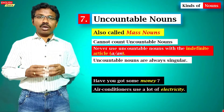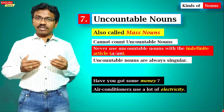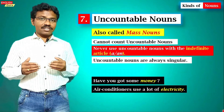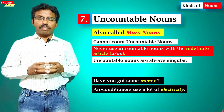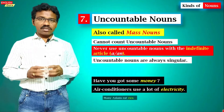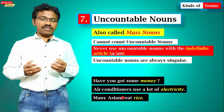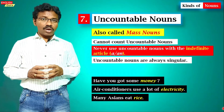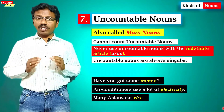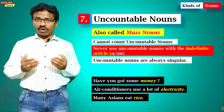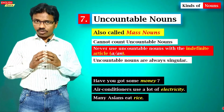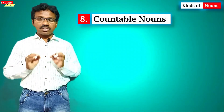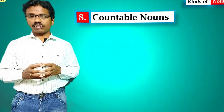Air conditioners use a lot of electricity. The word electricity is also an uncountable noun. Many Asians eat rice. Rice is also an uncountable noun. So uncountable nouns cannot be counted, they do not have plural forms — they only have singular forms.